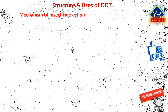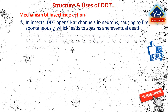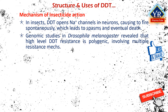Mechanism of insecticide action. In insects, DDT opens sodium ion channels in neurons, causing insects to fire spontaneously, which leads to spasms and eventual death. Insects with certain mutations in their sodium channel gene are resistant to DDT and similar insecticides. Genomic studies in the model genetic organism Drosophila melanogaster revealed that high-level DDT resistance is polygenic, involving multiple resistance mechanisms.